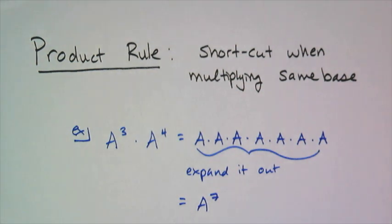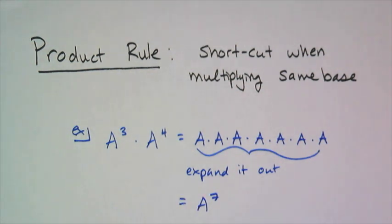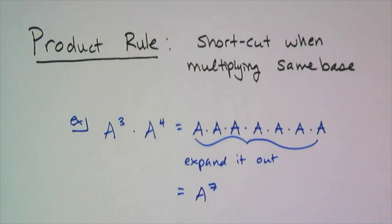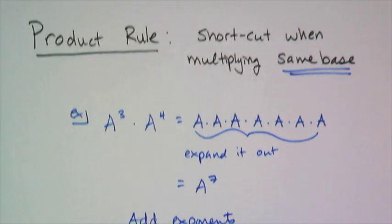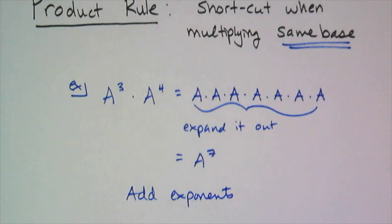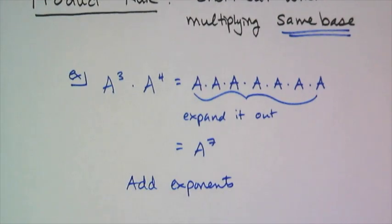Or I can just think of it this way: I have three a's and four a's multiplied together. How many a's is that all together? Well, it's seven. So the shortcut when you have the same base is just to add the exponents. It makes sense, because if you think about these things all expanded out, you have three a's and then four a's gives you a total of seven a's.